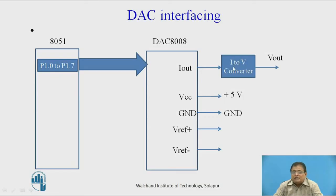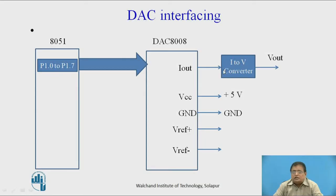The I_out current is converted to voltage using an I-to-V converter. The simplest way is to use one resistor at the I_out pin with the other end connected to ground, and take the voltage across this resistor. But to get precise conversion, you can use an op-amp. VCC should be connected to +5V and ground to ground.